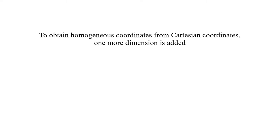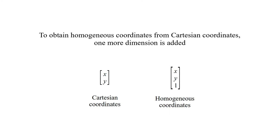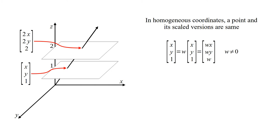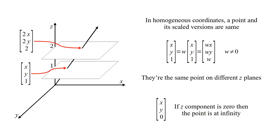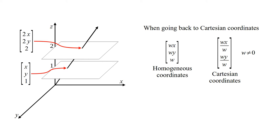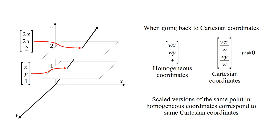To obtain homogeneous coordinates from Cartesian coordinates, one more dimension is added. In homogeneous coordinates, a point and its scaled versions are the same — they are the same point on different z-planes. If the z-component is zero, then the point is at infinity. When going back to Cartesian coordinates, x and y coordinates are divided by the z-coordinate. Scaled versions of the same point in homogeneous coordinates correspond to the same Cartesian coordinates.